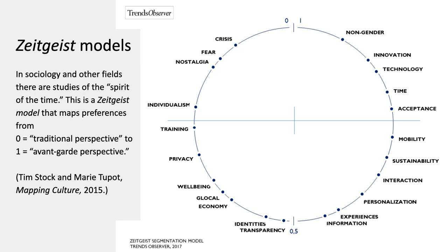The idea is that you go around the circle from the top, starting at zero, going counterclockwise. You go from traditional perspectives to avant-garde perspectives. Starting from the top going counterclockwise: crisis, fear, nostalgia, individualism — these would be conservative trends driven by an interest in tradition or a fear of the new. As you go around to about three o'clock: mobility, acceptance, time, technology, innovation, non-gender. In the opinion of the people who made this circle, that's a way of measuring in sociology the zeitgeist — the connection between people who are traditionalists and people who are avant-garde. Just an example of the really far-flung influence of Hegel.